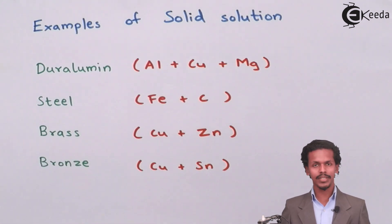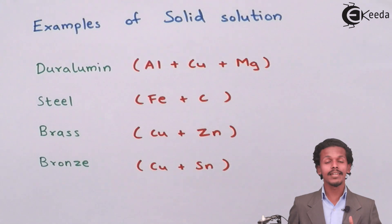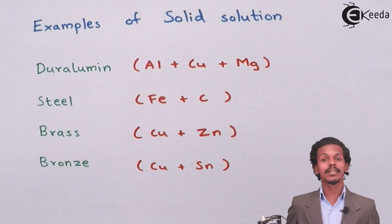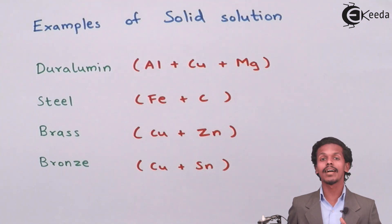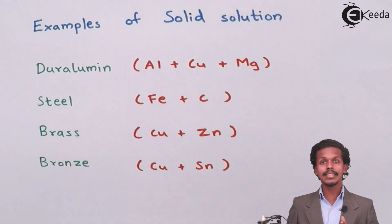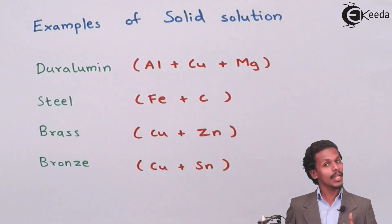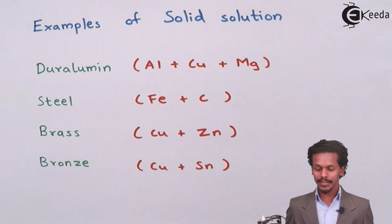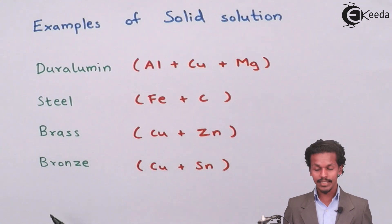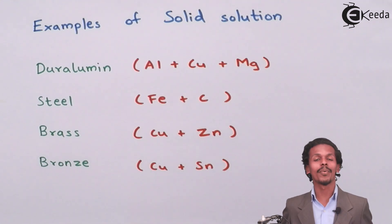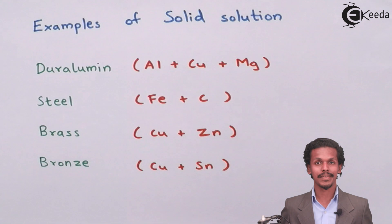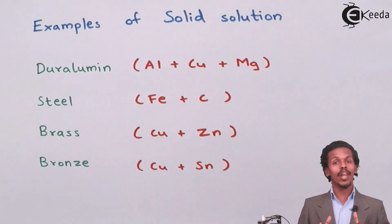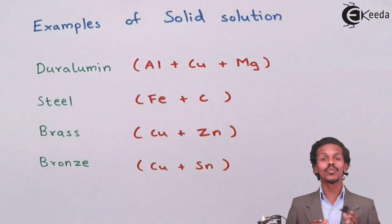The next example is steel, a very common alloy made up of iron and carbon — iron is a metal while carbon is a non-metal. Next is brass, which is made up of copper and zinc, and bronze, which is made up of copper and tin. These are a few examples of alloys, or solid solutions.